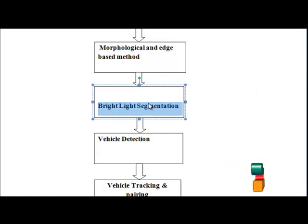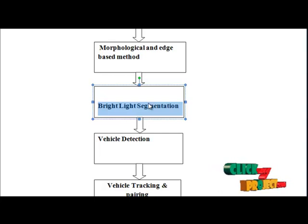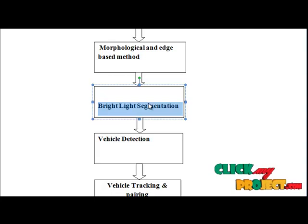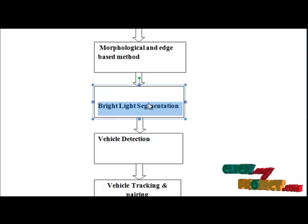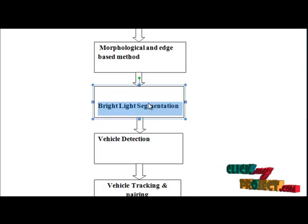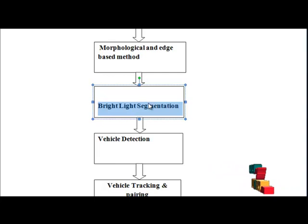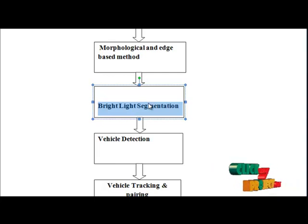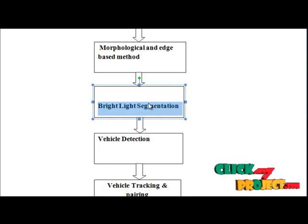The bright object extraction process extracts bright objects from the road image to facilitate subsequent rule-based classification and tracking. To reduce computational complexity, we first extract the grayscale image — the Y channel of the image — by performing an RGB to grayscale transformation. To extract bright objects from the transformed gray intensity image, the pixels of bright objects must be separated from other object pixels of different illuminations. For this purpose, we have presented a fast and effective multi-level thresholding technique.